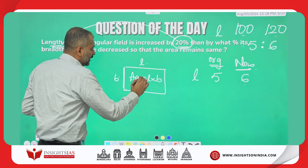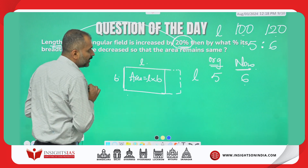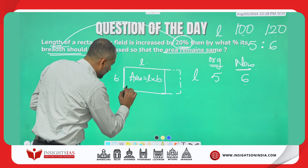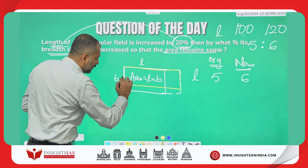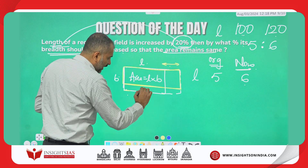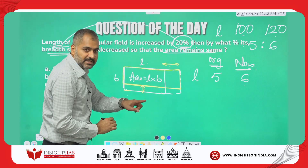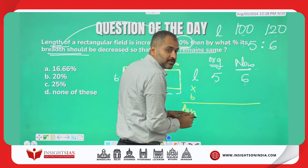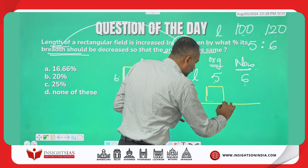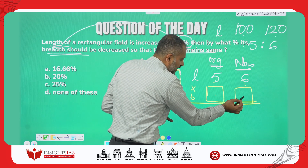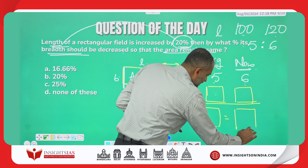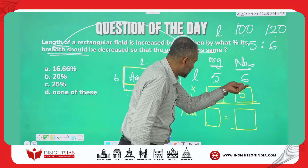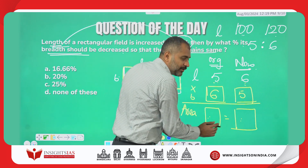Length increases by 20 percent. After increasing the length, the breadth should be decreased so that the area remains the same — the area should not alter. Since I have increased the length by this much, the breadth has to decrease by a corresponding amount. Length × breadth = area. If length goes from 5 to 6, then breadth must change so that the products are equal. The only mathematical possibility: if length is 5 to 6, breadth must go from 6 to 5.